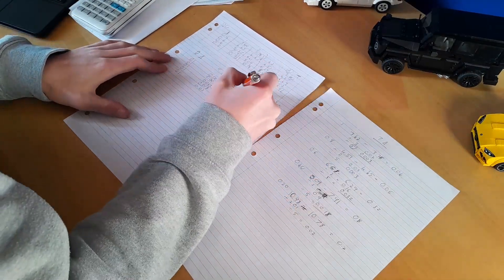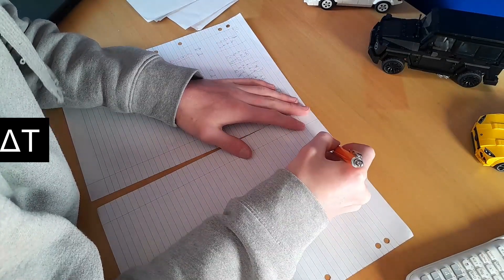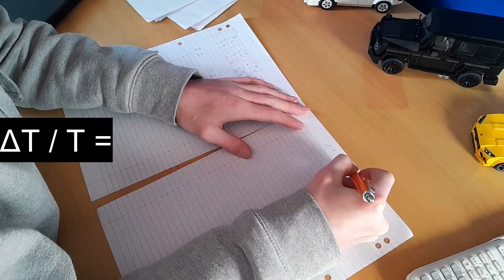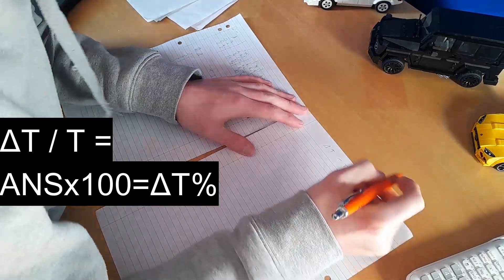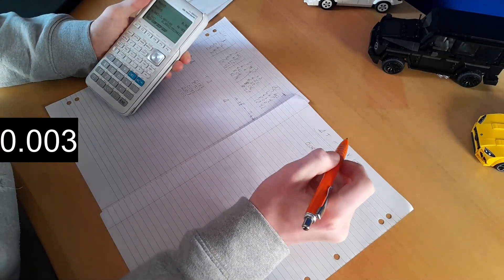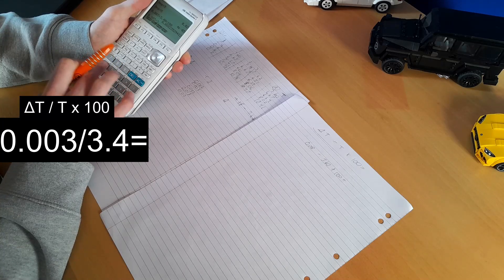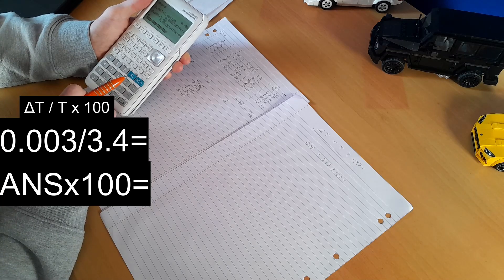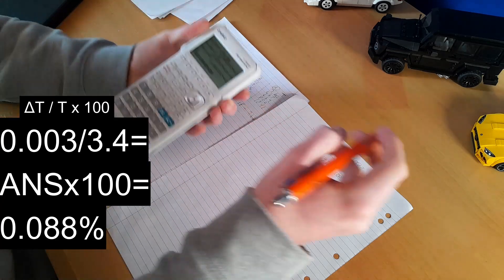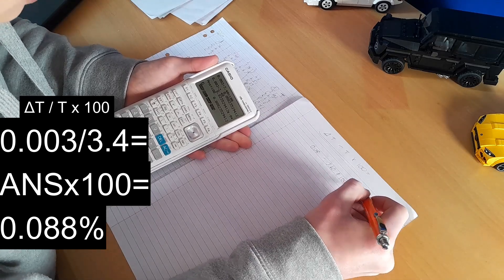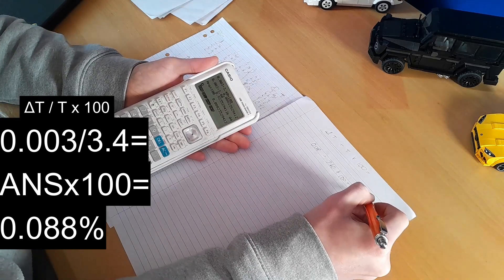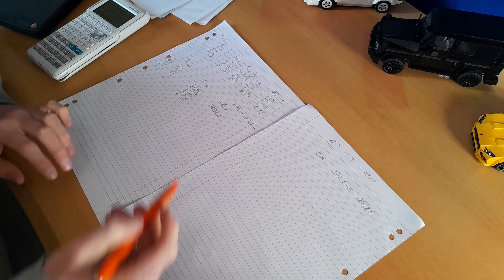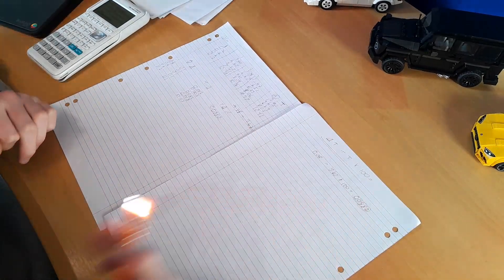Now you need to find the percentage of that. And to do that, you take your uncertainty, your t uncertainty, and divide that by t, and times that by 100, and that will give you the percentage. So let's do that in two steps. We've got 0.003 divided by 3.40. That equals 8.823529412. We'll then times that by 100, which gives us a percentage of 0.0882.